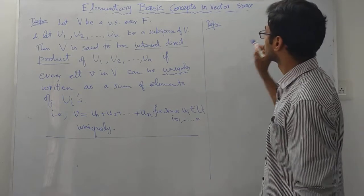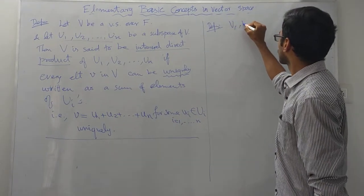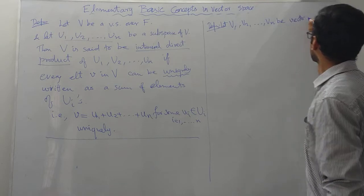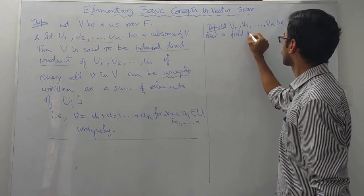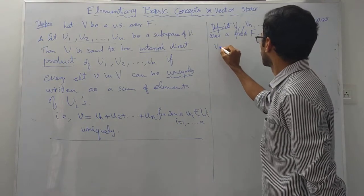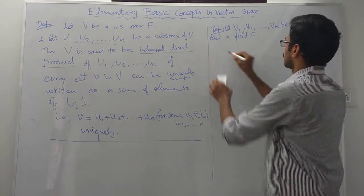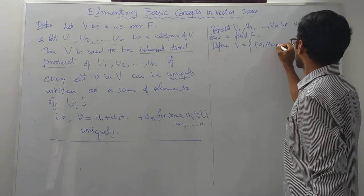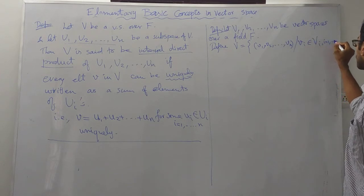The next idea is the external direct product. Given vector spaces V1, V2, etc., Vn over a field F, we define V as the Cartesian product — that is, the set of all tuples (v1, v2, ..., vn) such that vi belongs to Vi for i equal to 1, 2, etc., n.